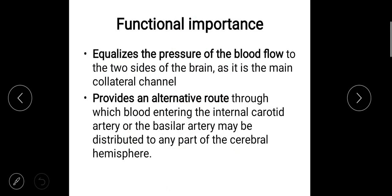The functional importance of the circle of Willis: it equalizes the pressure of blood flow to the two sides of the brain, as it is the main collateral channel. Since it is arranged in a circular manner, the pressure will be equal in all directions. It also provides an alternative route through which blood entering the internal carotid artery or the basilar artery may be distributed to any part of the cerebral hemisphere, thus preventing damage caused by reduced blood supply.